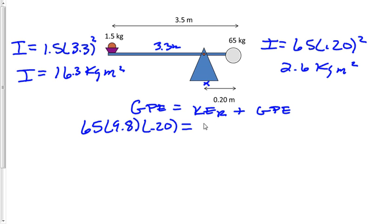Now to get our kinetic energy rotational, we are going to add both of those together. So we'll go one half, and then I'll do 16.3 plus 2.6 times omega squared.